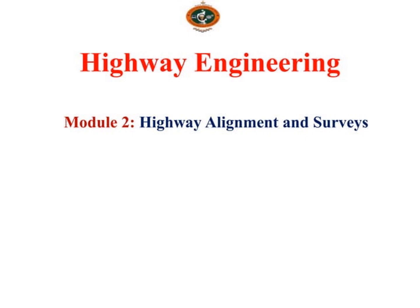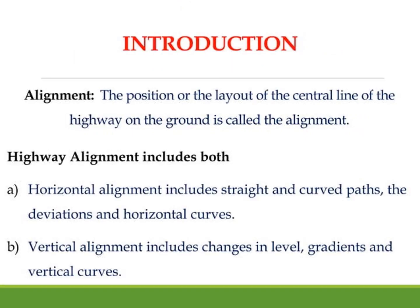So first survey, after that only alignment. We can find what is the geography of the particular location. First survey, then alignment — we can go for many options based on the criteria. The final decision by the Additional Division Engineer or senior engineer will fix the alignment. The position or layout of the center line of the highway on the road is called alignment.